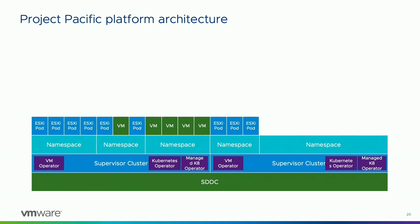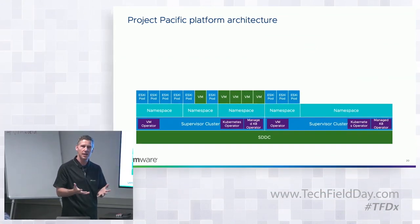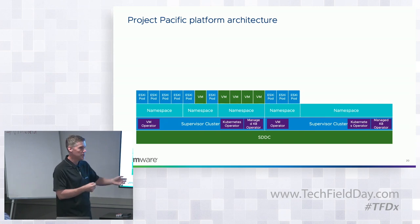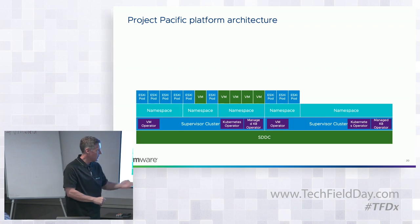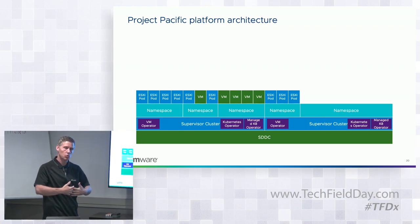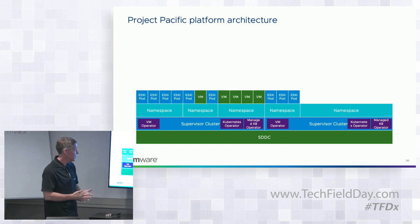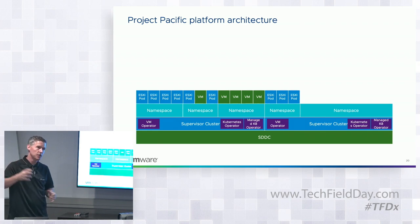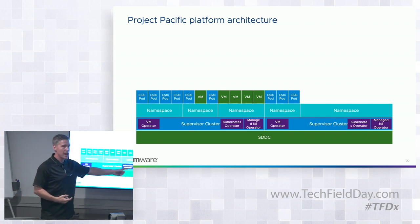There are two additional operators here. First is the managed Kubernetes operator — this is an easy button. The idea is that through a very simple specification, you can deploy an opinionated Kubernetes cluster. Somebody who is not a Kubernetes engineer, or has just basic knowledge of what they want, would be able to submit a very short spec file, and the managed Kubernetes operator would create the cluster from that. What happens is the managed Kubernetes operator creates the cluster API spec, which is then handled by the Kubernetes operator — our implementation of the cluster API spec — which ultimately creates spec files to build the VMs underneath.